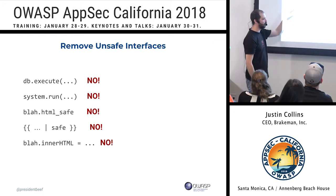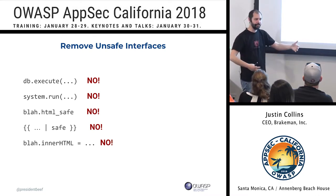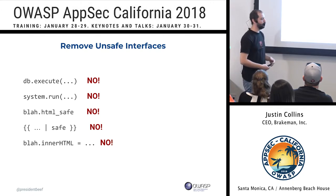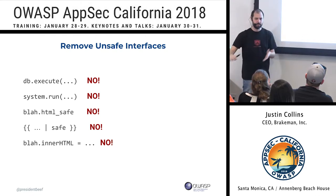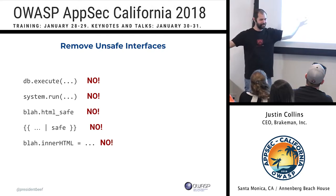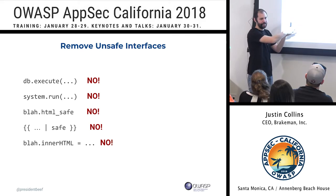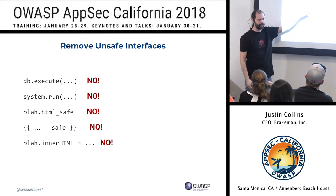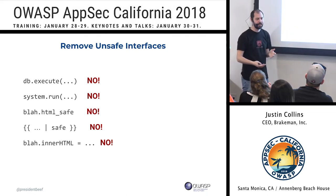For templating languages in particular, something often missing is a good built-in way to compose templates. If you don't have a good built-in way of combining templates, people end up with the template value coming in as a string, and then they throw it into something like innerHTML and say 'I can't escape it because I generated a bunch of HTML from another template' — and now they have to mark it as safe. That's a poor way of composing templates. Also: innerHTML — just stop.